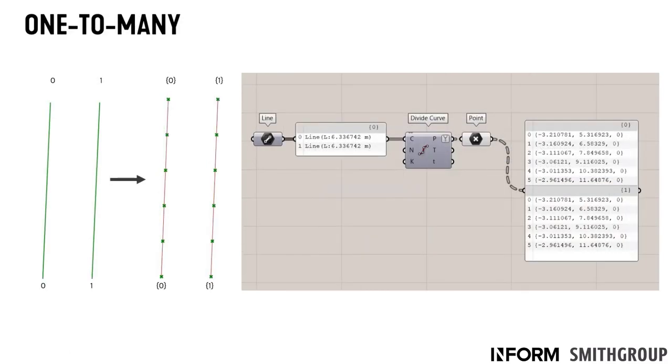We also have one-to-many type components, which also require data trees. If we consider this example of dividing a curve into multiple points, if we input two lines on the output, I want to maintain that child-parent relationship. I want to know all the points that came from line zero. I want to contain them together. So Grasshopper will automatically create a tree structure. It'll branch out from whatever started. To separate, in this case, the points that belong to line zero will get its own list, and then the points that belong to line one get its own list as well, separated by the branching structure.